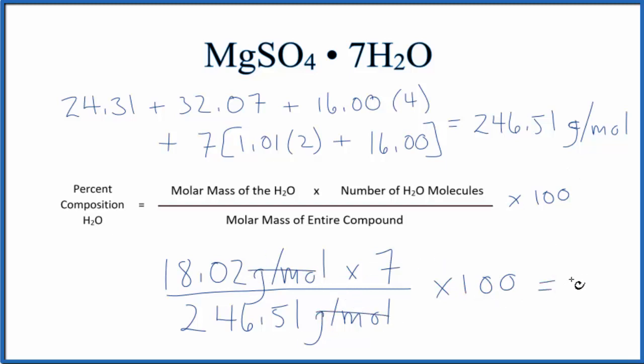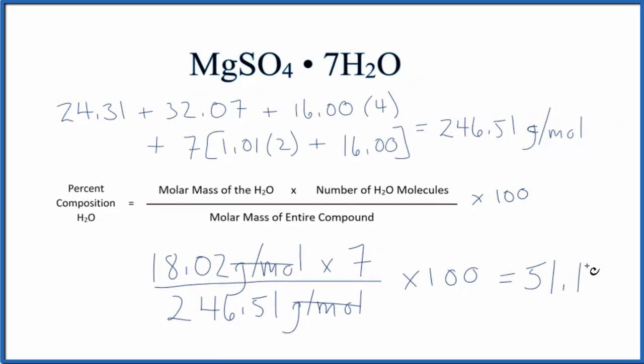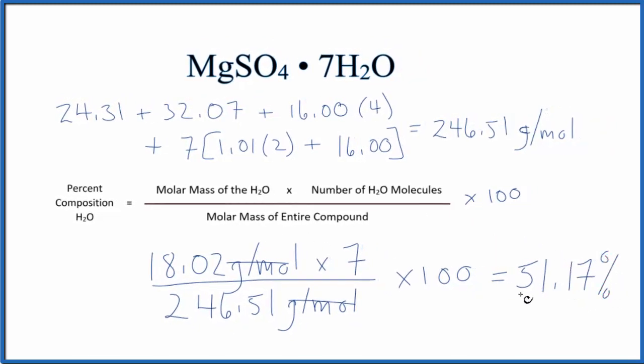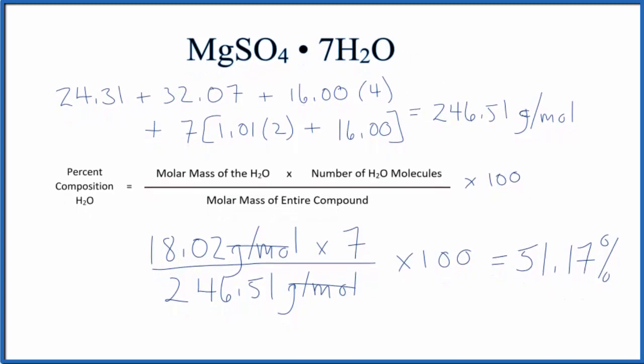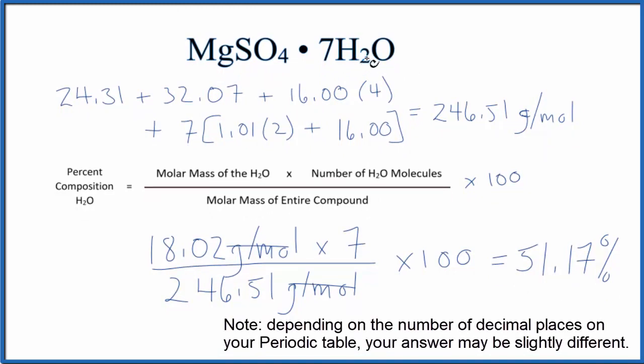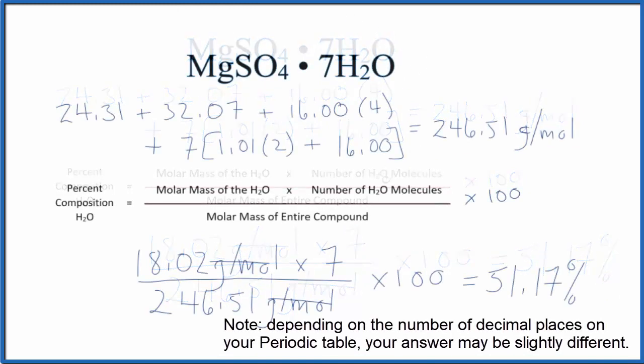What this means is if we have a sample of magnesium sulfate heptahydrate, the percent of that mass that's due to water is going to be 51.17 percent. So more than half of this compound's mass is due to the water molecules.